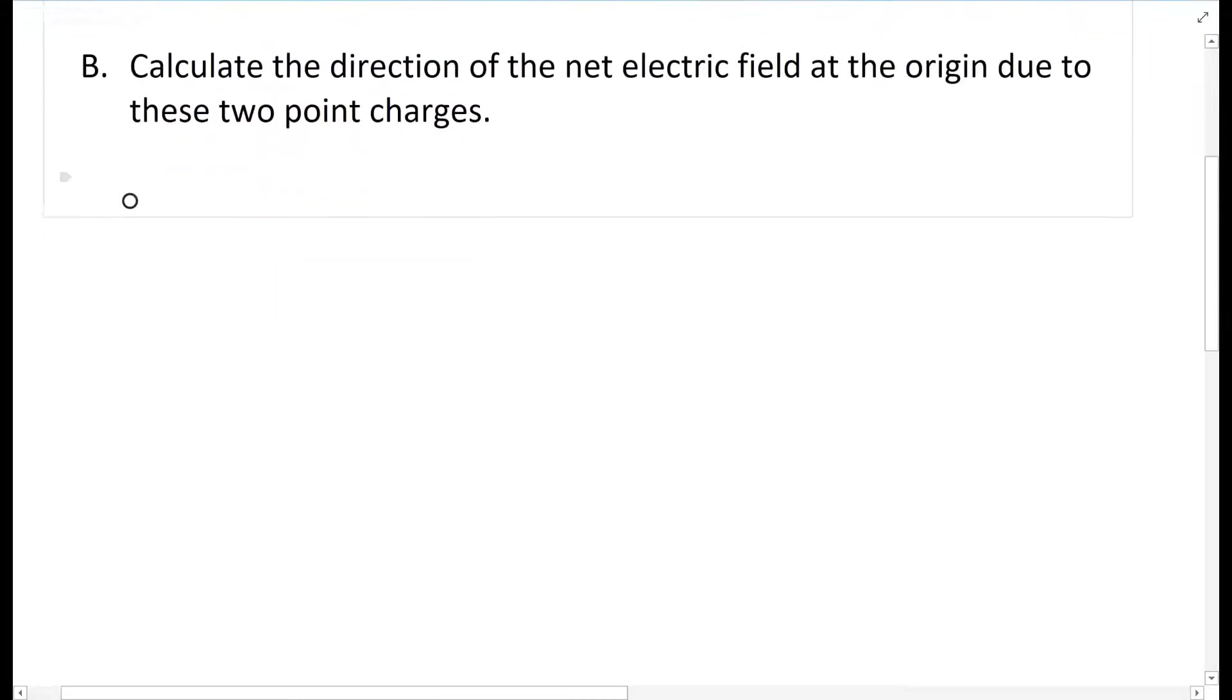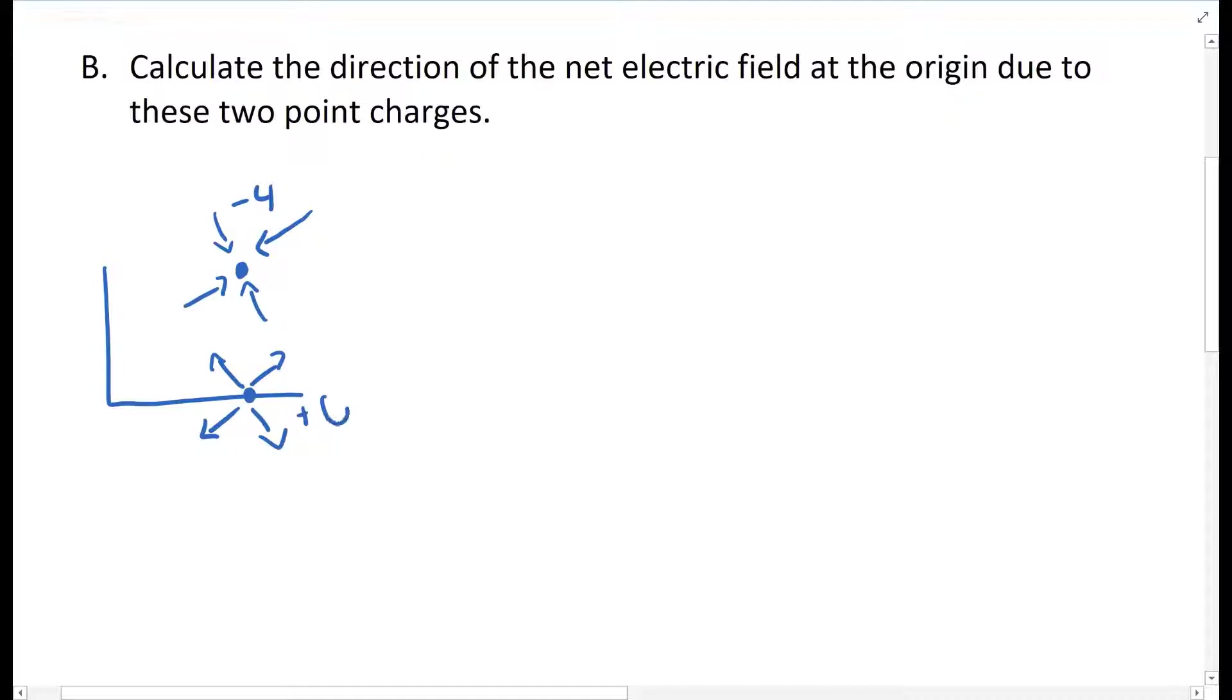So we're going to give this a quick draw. We're going to have Q2 around here, Q1 around here, right? And as we know, this one's negative, and electric fields point in towards negatives. It's positive, so it points out.